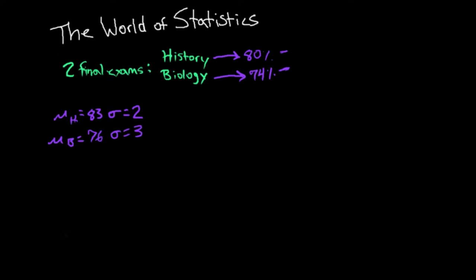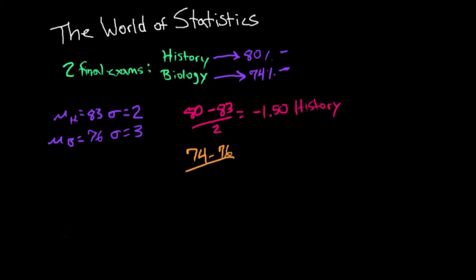We can use this information to calculate our z-scores. For history: our score was 80, the class average was 83, so (80 − 83) / 2 = −1.50. For biology, using a different color: (74 − 76) / 3 = −0.67.